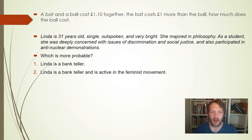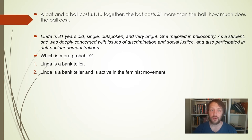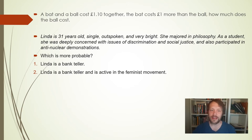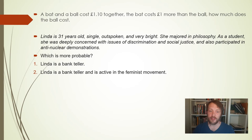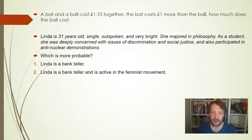The second puzzle: Linda is 31 years old, single, outspoken, and very bright. She majored in philosophy. As a student she was deeply concerned with issues of discrimination and social justice and also participated in anti-nuclear demonstrations. Which is more probable - that Linda is a bank teller, or that Linda is a bank teller and active in the feminist movement? This is what Kahneman and Tversky would call a representativeness bias - we think that Linda's description is representative of her being a feminist.